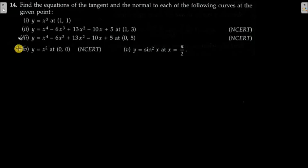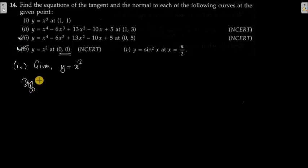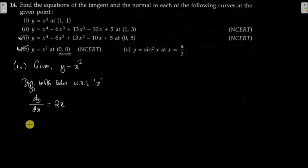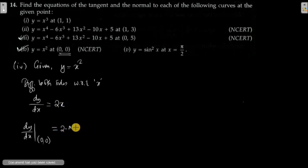Now let's take question 4. Given y = x² and the specified point is (0, 0). Differentiating both sides with respect to x, we get dy/dx = 2x. This is dy/dx — remember, this is not the slope yet. The slope is found at the specified point, so dy/dx at (0, 0): substitute x = 0, giving 2 × 0 = 0. So the slope is 0.